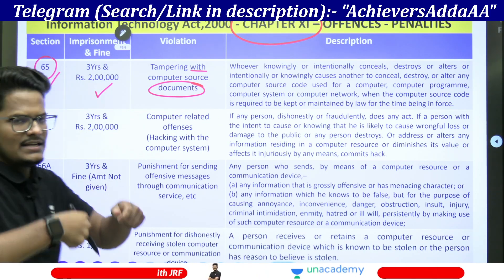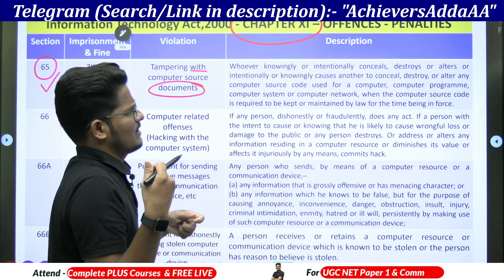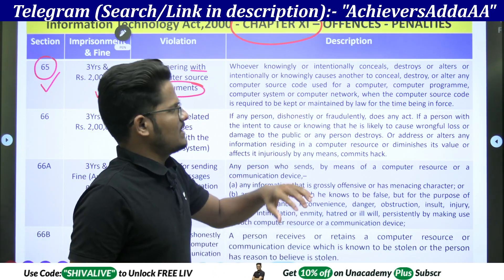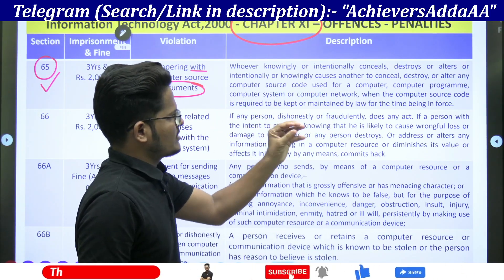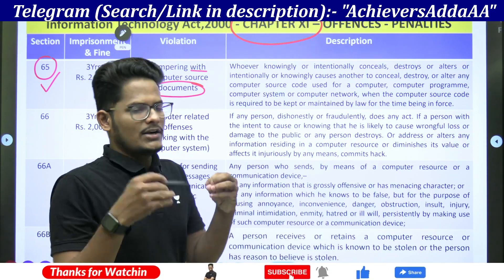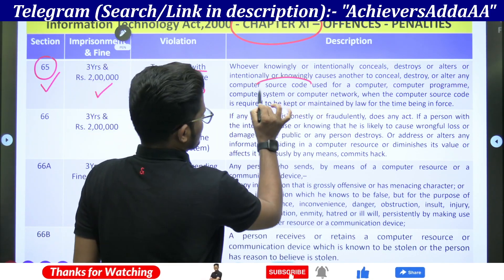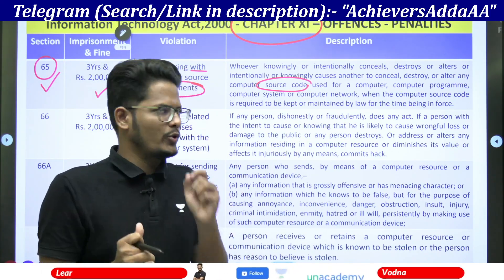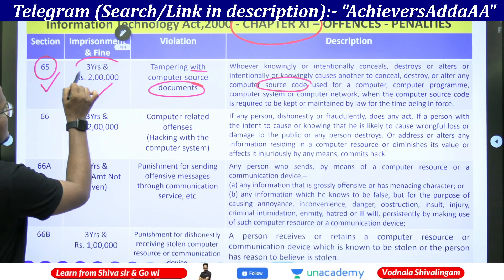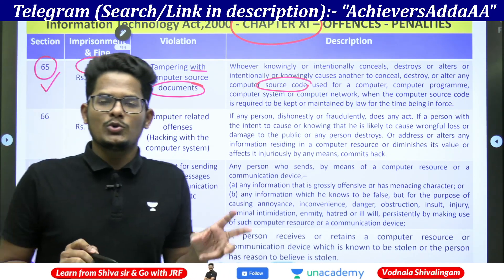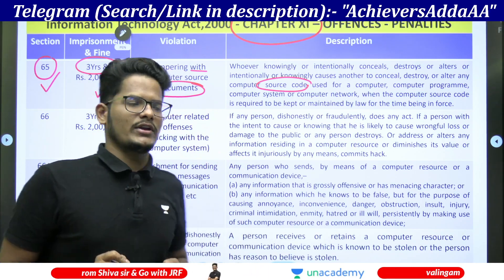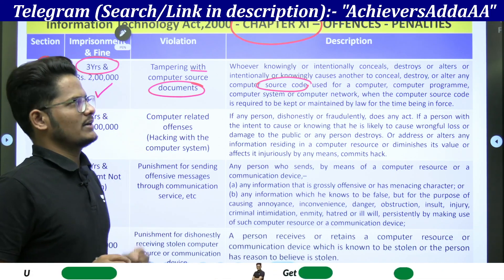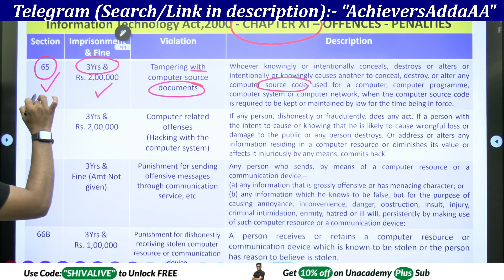Tampering means manipulating or destroying — knowingly or intentionally conceals, destroys or alters, or knowingly causes another to conceal or destroy any source document, meaning the original document you are trying to destroy intentionally, wantedly. So then you are liable for three years imprisonment and up to 2 lakh penalty fine. That is section number 65 when you do it wantedly.